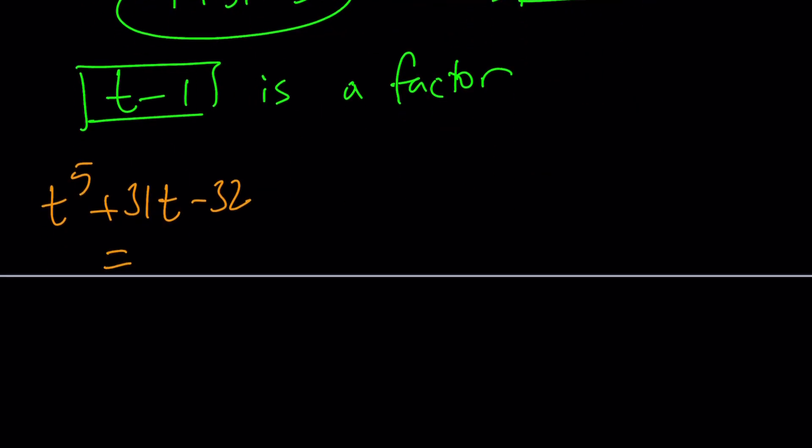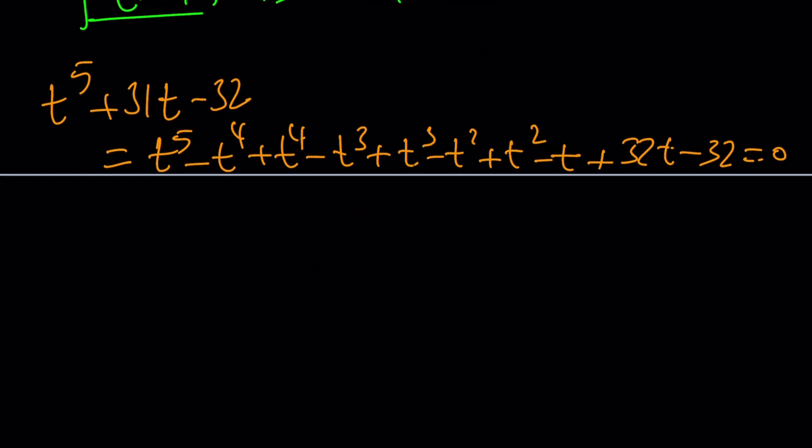Ready? This is going to be fun. So, T to the 5th minus T to the 4th plus T to the 4th minus T cubed plus T cubed minus T squared plus T squared minus T plus, I need to get 31T, so I'm going to add 32T and finish up with minus 32. And guess what? Everything checks out. Awesome. Now, we're going to do factoring by grouping.